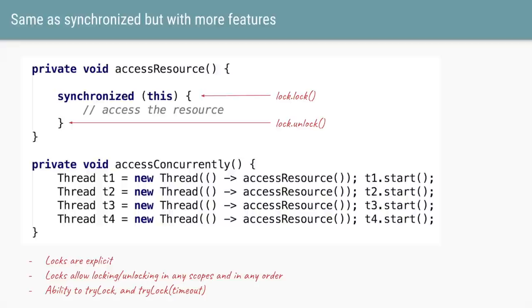Locks have some extra features. For example, if you have four locks A, B, C, and D and want to ensure all four are acquired by a thread to access some resource — with synchronized, you have to have the open and closing brackets in the same scope. But with locks, you can acquire the lock in one method and release it in another. If you have four locks, you can acquire them in any order and release them in any order, giving you that flexibility. Additionally, locks have extra methods like tryLock and tryLock with a timeout, which we'll see later in the video.